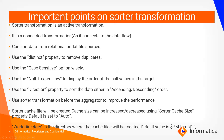Now the important points of the Sorter transformation. Sorter transformation is an active transformation — the number of records passing into the transformation is not necessarily equal to the number outputting, and the order of records changes, which is why it is active. It is a connected transformation, as it connects to the data flow. It can sort not only relational data but also flat file sources.